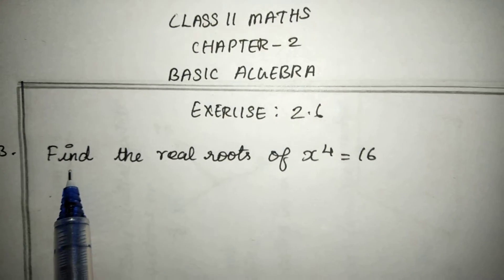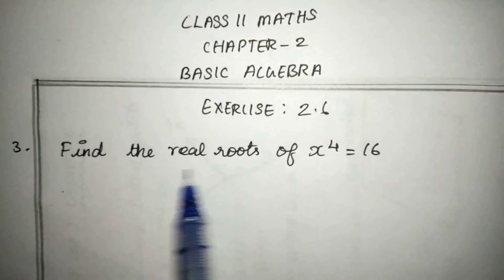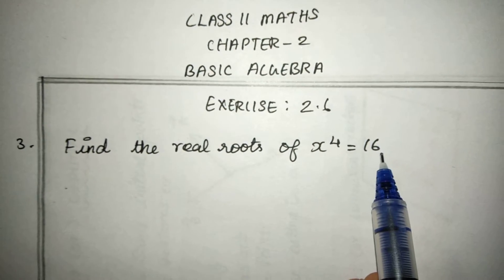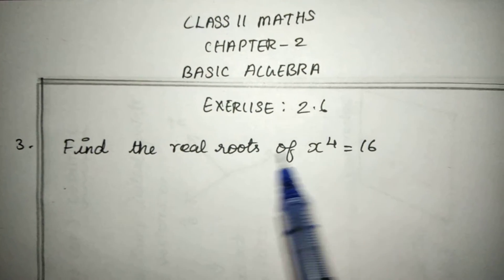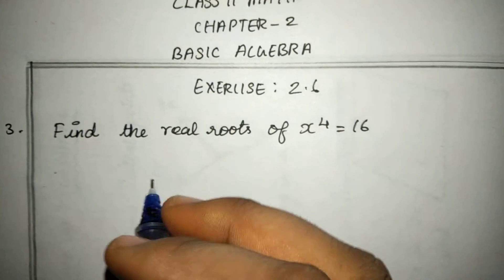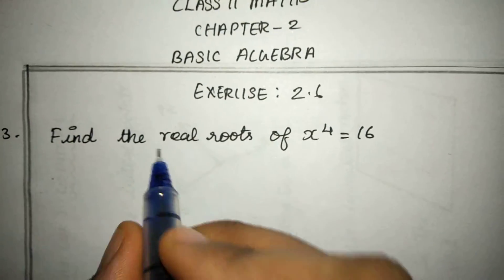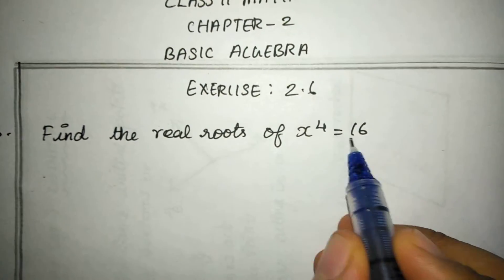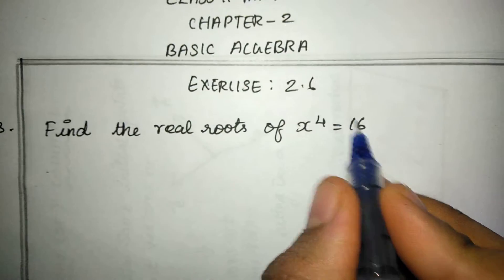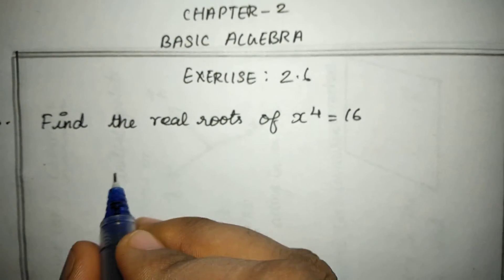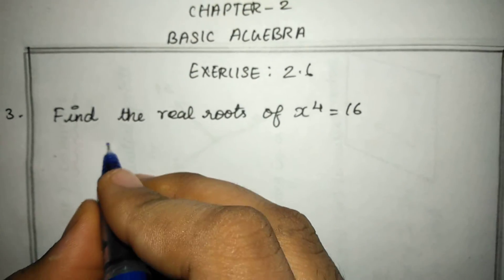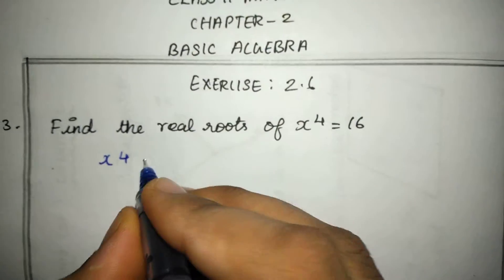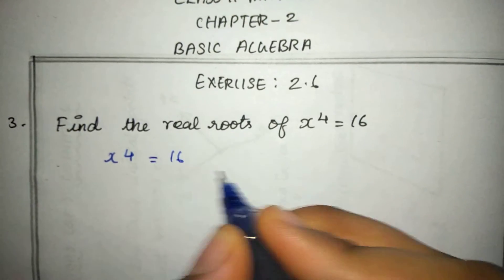Let's see the 3rd sum: Find the real roots of x to the power 4 equal to 16. So we are given x⁴ = 16. How can we do this?